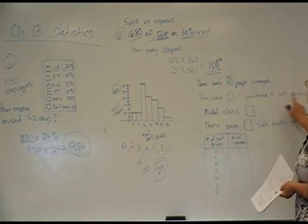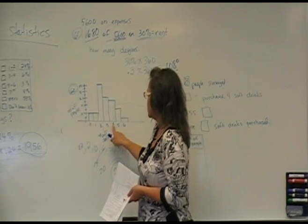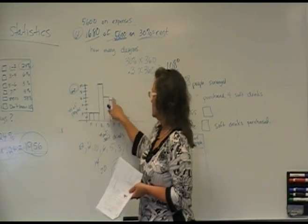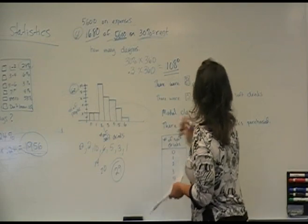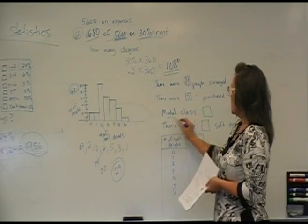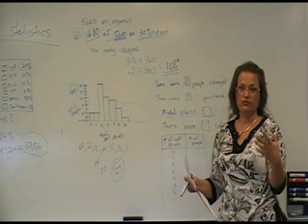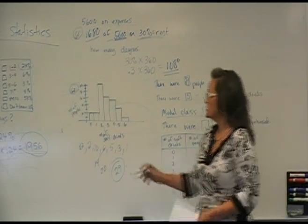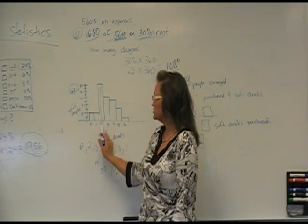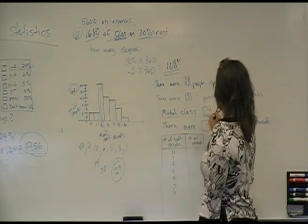There were blank amount of people who purchased four soft drinks. So using that information, four soft drinks, that's this bar graph. It looks like five people bought four soft drinks. So it's just a matter of practice interpreting the graph. The modal class. Modal always means the one most often used. What's the most often used? And there's definitely a distinct number that shows up here, two soft drinks. Most people, for the modal class, was two soft drinks.